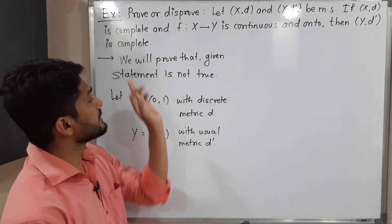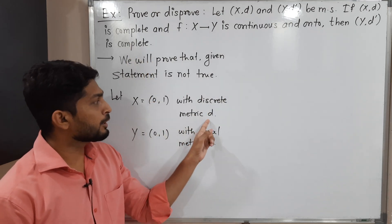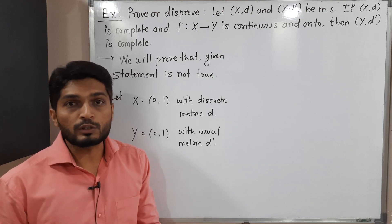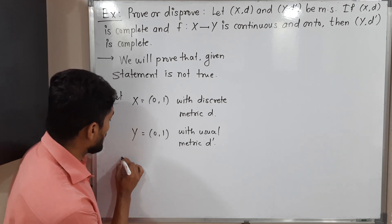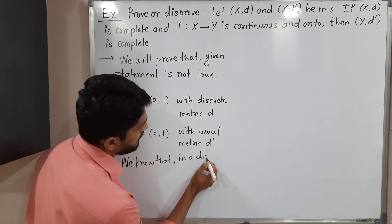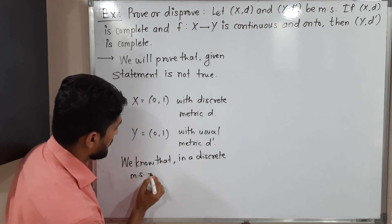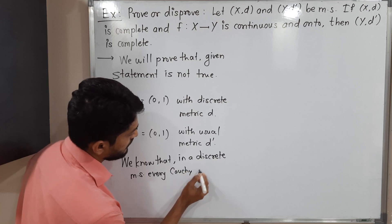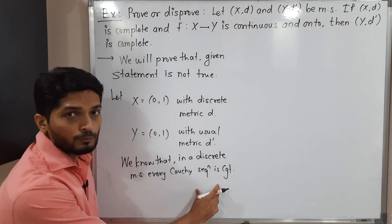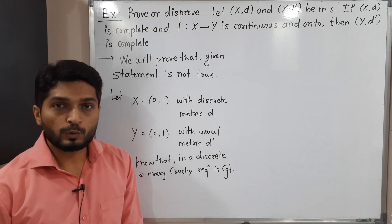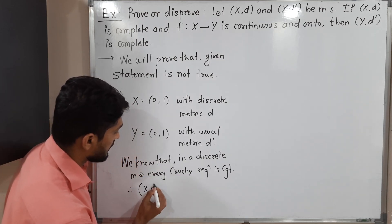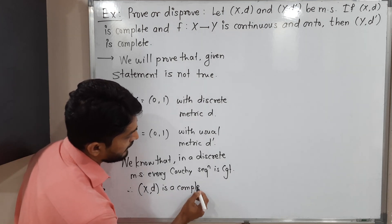Now we prove that (X, d) is a complete metric space. We know that in a discrete metric space every Cauchy sequence is convergent. This is nothing but the definition of a complete metric space. Therefore, since d is a discrete metric, (X, d) is a complete metric space.